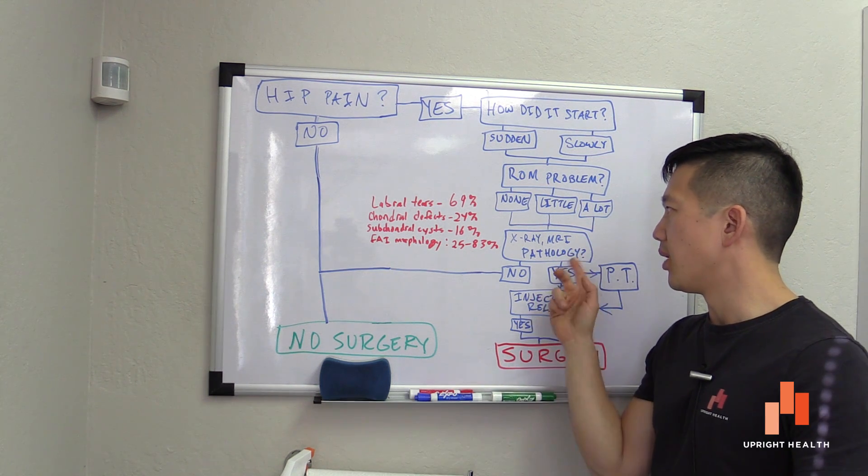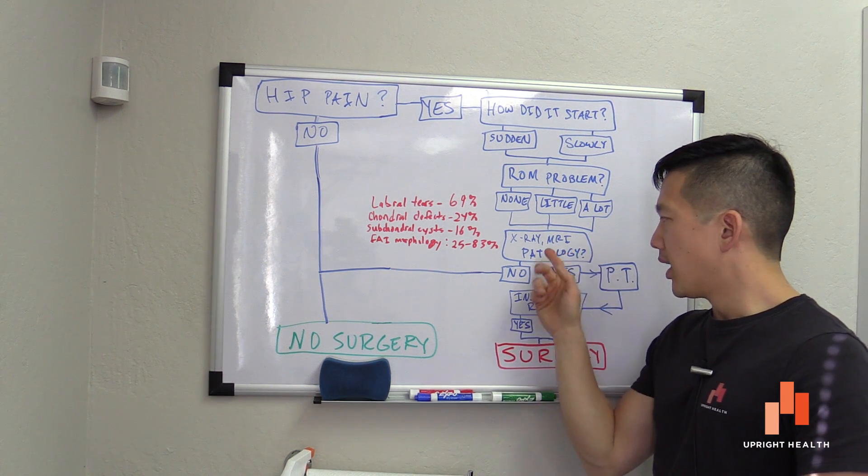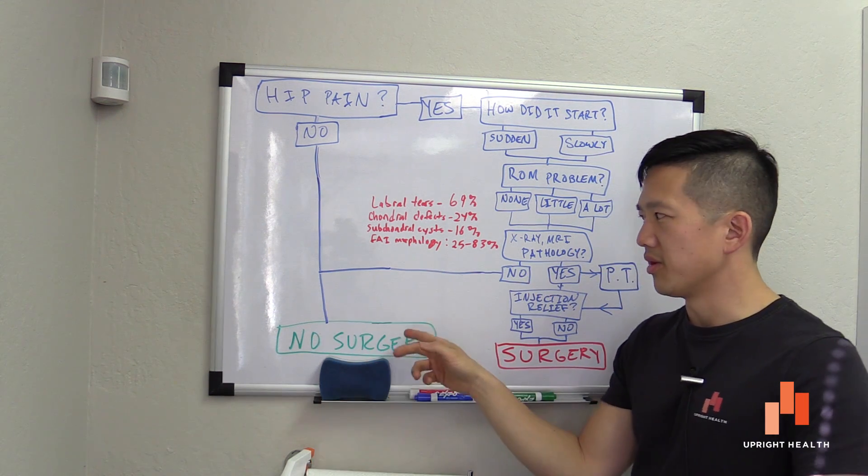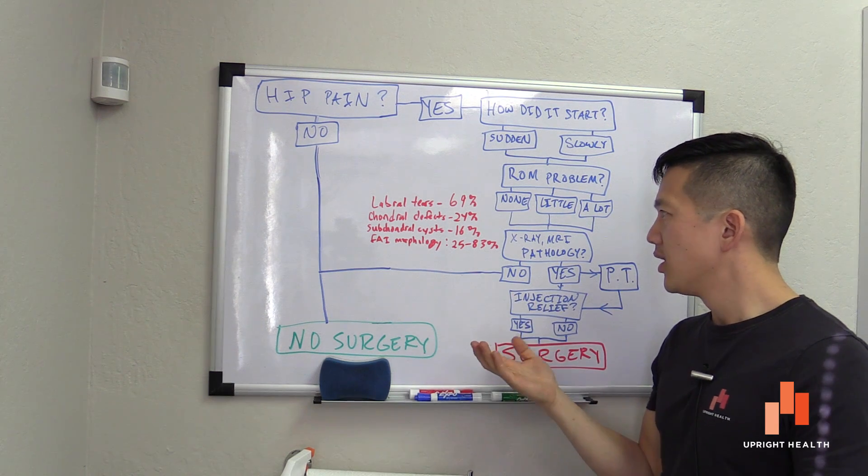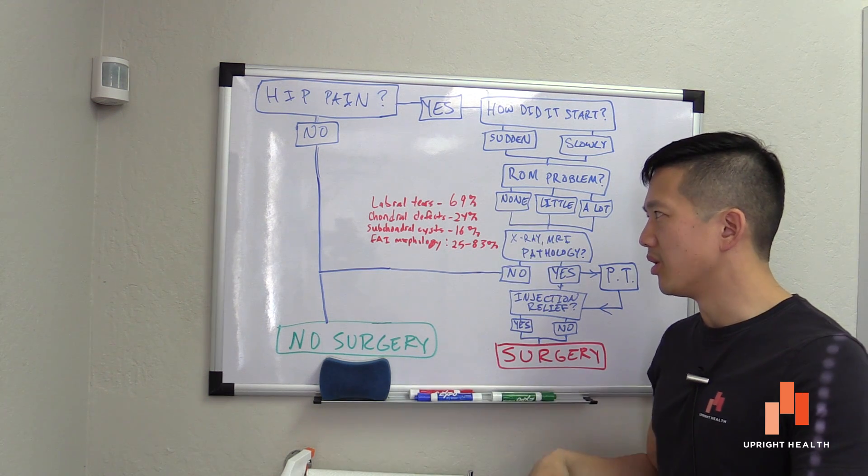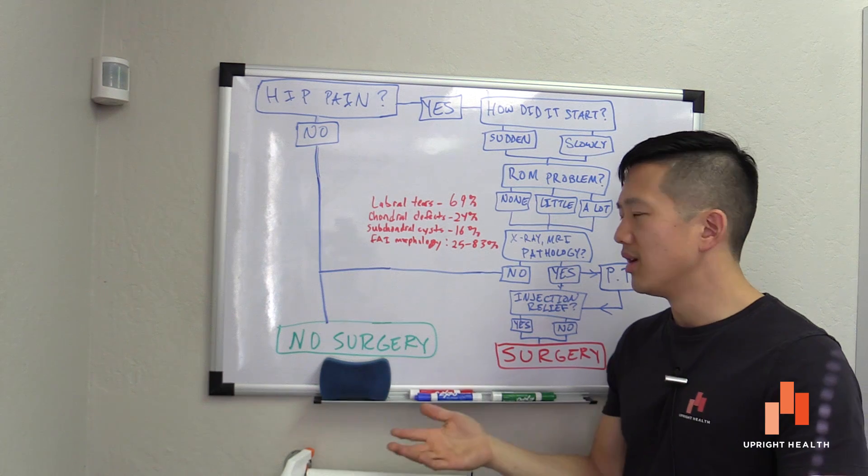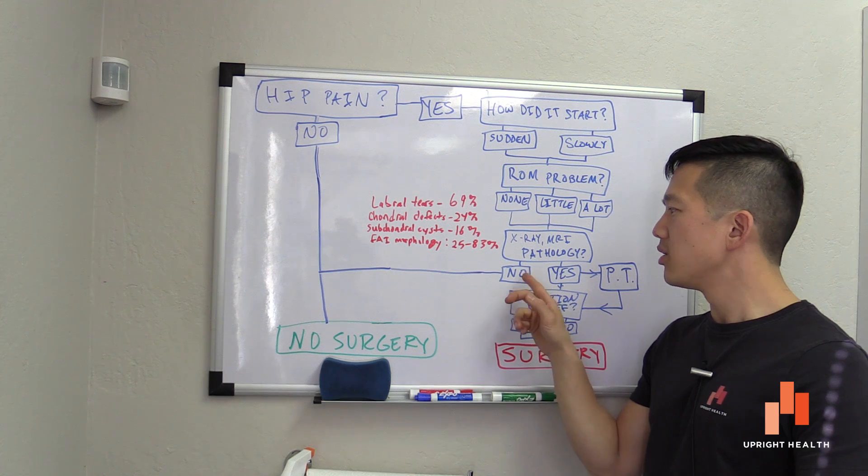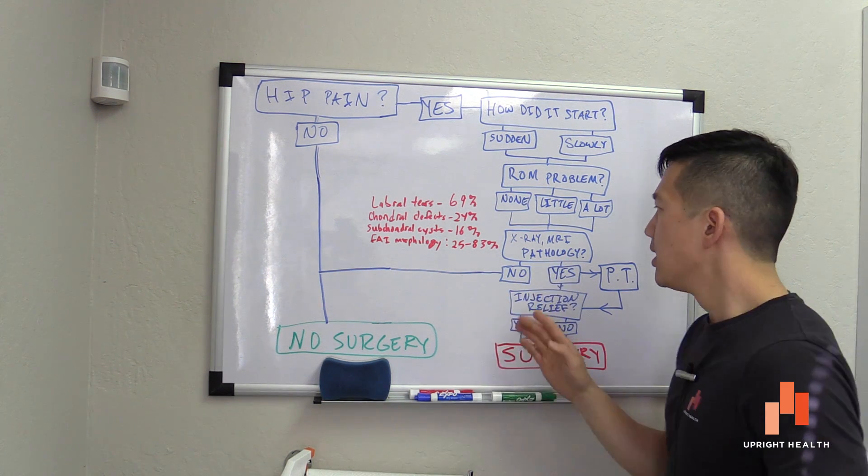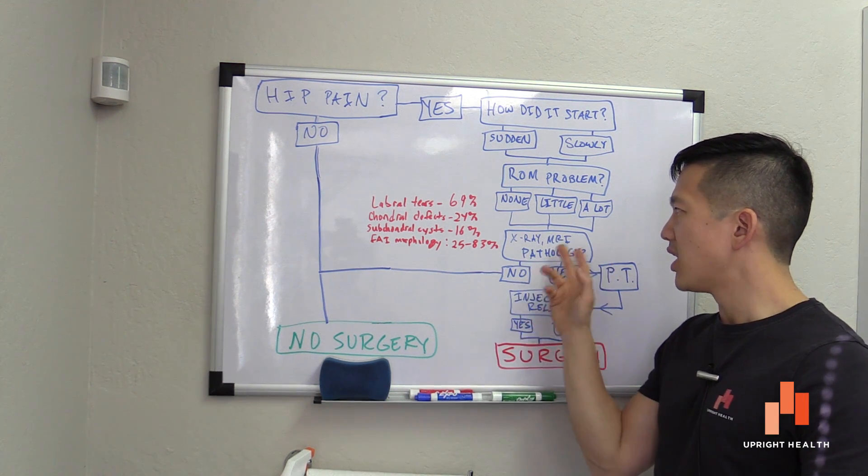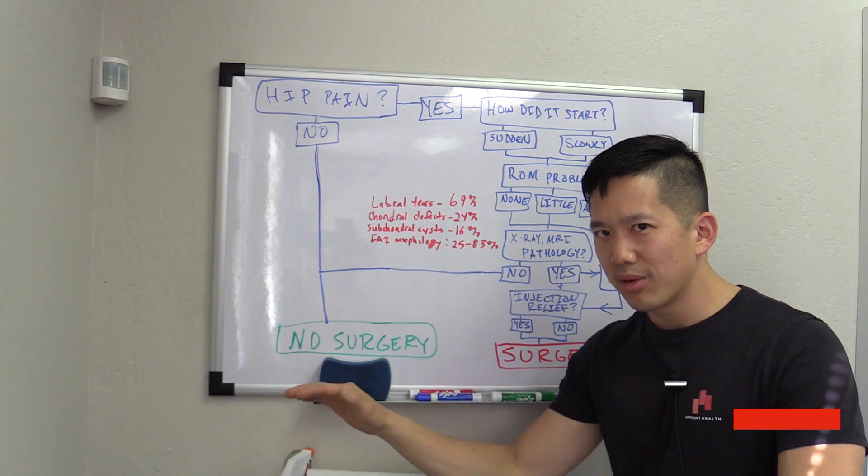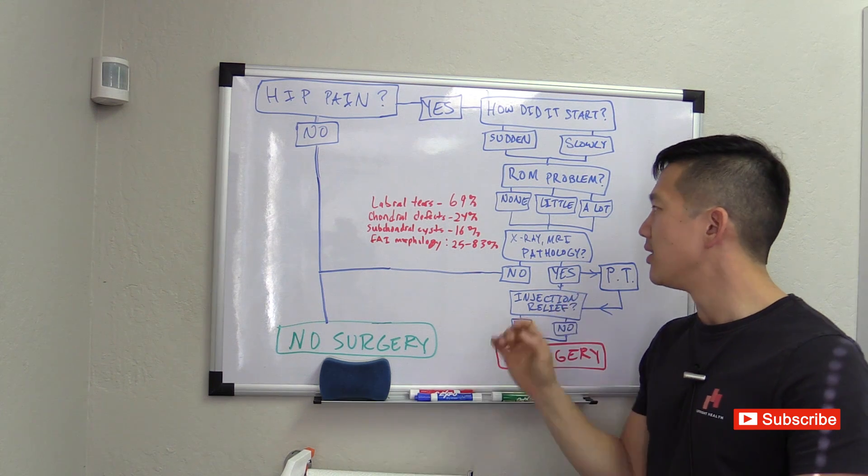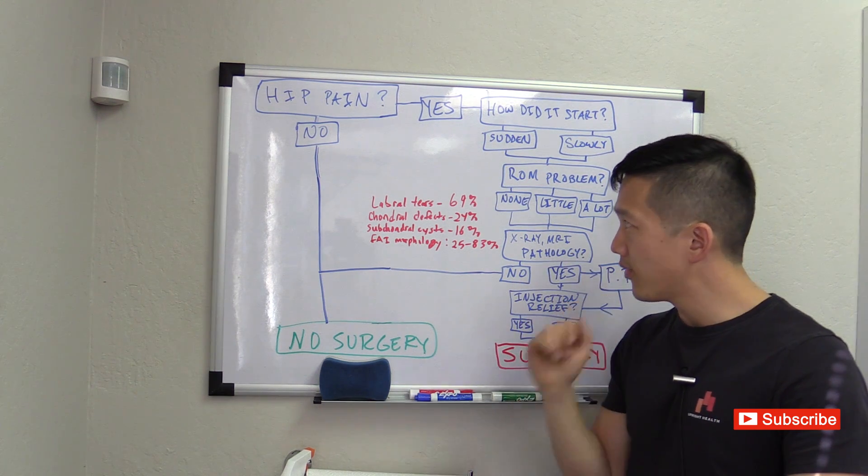When they go to an end range, even though the end range is further than maybe somebody over here, they're still feeling discomfort and pinching. So regardless of the range of motion, you still get to move down the flow chart, which gets you to x-ray MRI pathology. And so if you get a totally clean x-ray and a totally clean MRI, you get to go to the no surgery candidate column because it's not a bone problem, it's not a labral problem, so nobody can say there's something to operate on. The problem here is that a no is extremely, extremely, extremely unlikely.